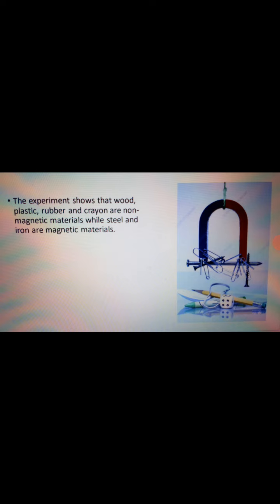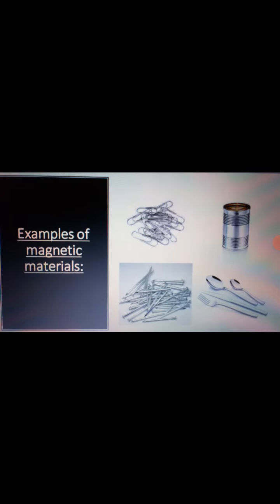The experiment shows that wood, plastic, rubber, and crayon are non-magnetic materials, as they are not attracted by the magnet, as you can see in the picture. While steel and iron are magnetic materials. Examples of magnetic materials include steel paper clips, steel spoon and fork, iron nails, and tin cans.